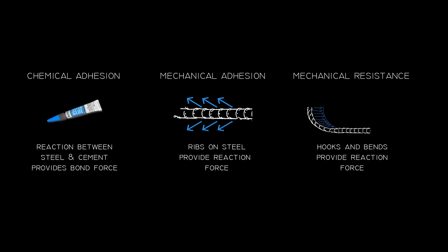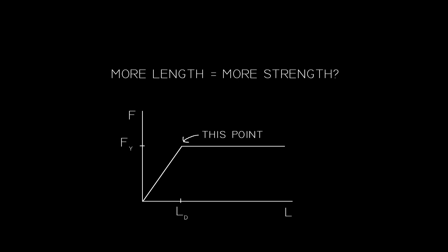While this may sound simple at first, there are some common mistakes engineers fall into. First of all, many think that more length is equal to more strength. This is true up to a point, but after that point, the strength is determined by the steel reinforcement area, not the development length.